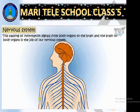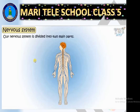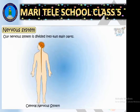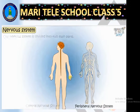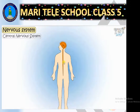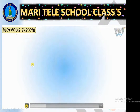Our nervous system is divided into two main parts: the central nervous system and the peripheral nervous system. The central nervous system consists of the brain and the spinal cord, as you can see in the diagram.